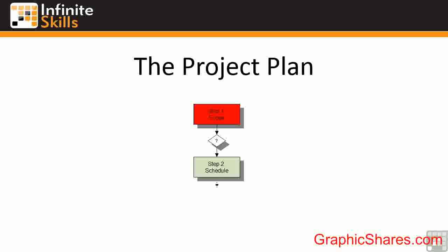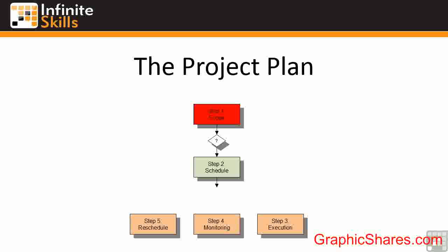Once you've built the schedule and resourced your project, we then look at starting to execute the plan — to actually carry out that planning, carry out the project, carry out whatever you're trying to do. During the execution you will monitor the progress and inevitably reschedule steps of your project. No project ever goes to plan. So steps three, four and five are effectively a loop that will keep continuing until you get to the end of the project. In Microsoft Project 2013 you can keep an eye on the baseline — that's the blue dotted line — and effectively measure yourself against that point.